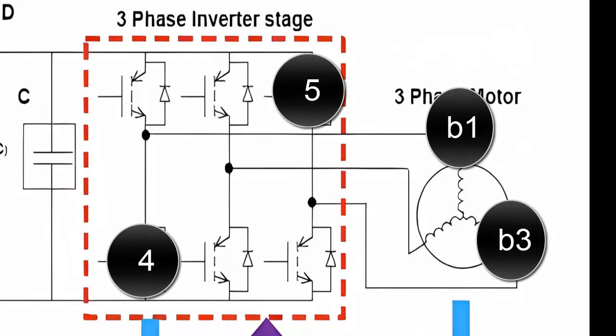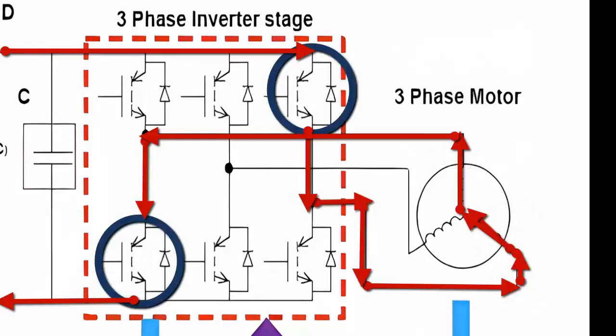Strategy 5: To enable the current flow to coil 3, it is necessary to activate transistor 5. Simultaneously, transistor 4 must be activated to allow the current to exit through coil 1.